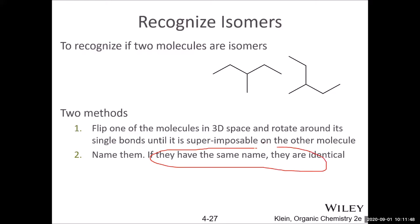If you have an organic molecule model kit, use it and try rotating the bonds. For example, these two molecules look very different, but if you name both compounds, they are both 3-methylpentane — so they are the same compound. No difference.